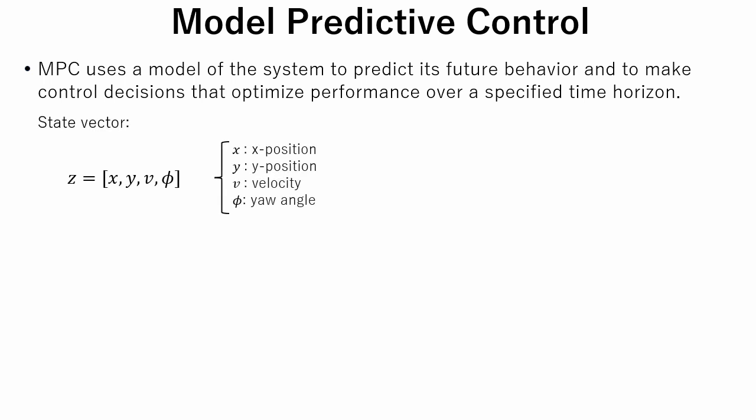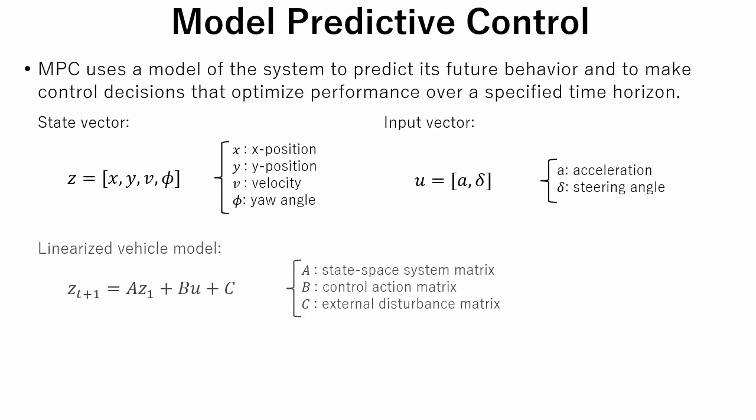We will use x, y position, velocity and yaw angle to represent state of our vehicle. As a control input, acceleration and steering angle is used. Linearized vehicle model is represented like this. Here A is a state space system matrix. B is control action matrix. C is external disturbance matrix.